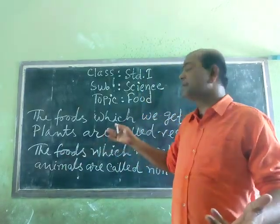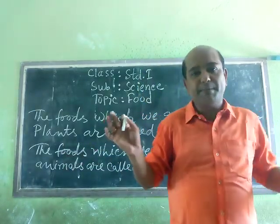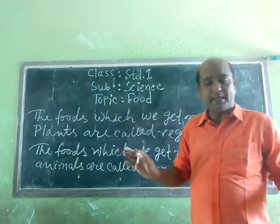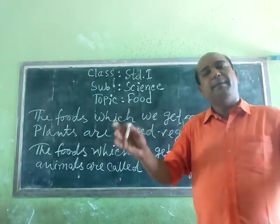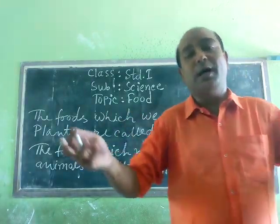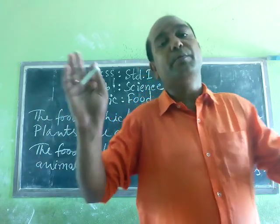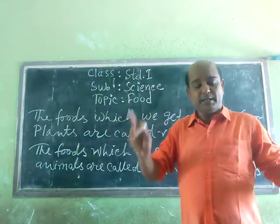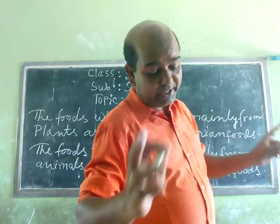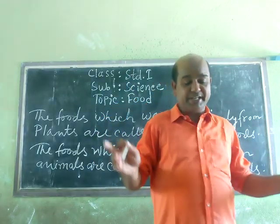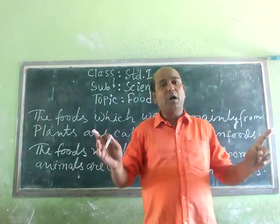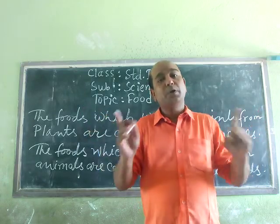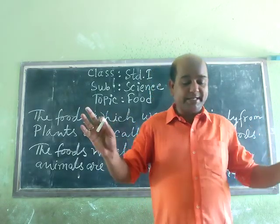Some examples of vegetarian food are rice, bread, green vegetables, corn, butter, and fruit. Non-vegetarian foods include fish, meat, and eggs.